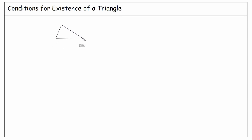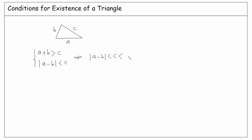Let's start with the conditions for the existence of a triangle. From basic geometry, we know that for a triangle with lengths a, b, and c, the sum of a and b must be greater than c. There is also another condition which says the absolute value of the difference between a and b must be less than c. Combining these: the absolute value of a minus b must be less than c, which must be less than a plus b. We can also add equality here to generalize to a squashed triangle.